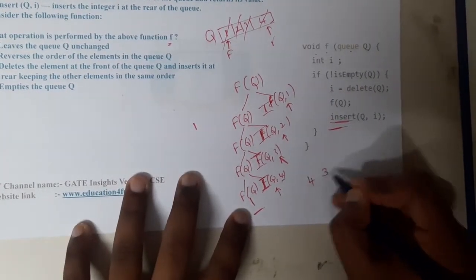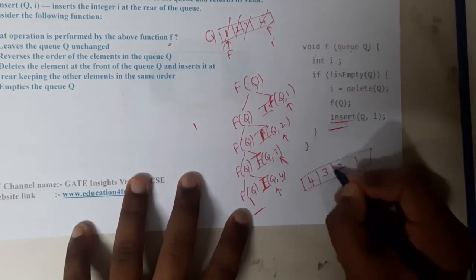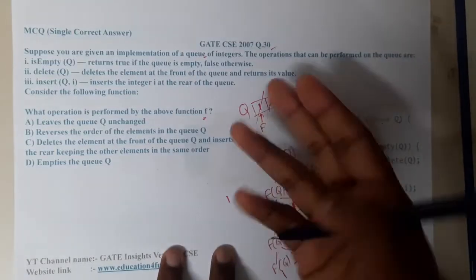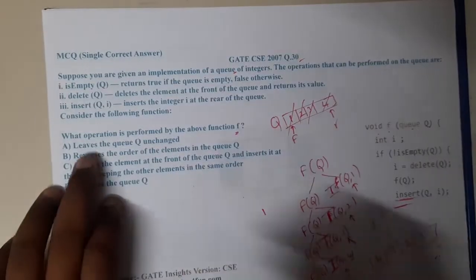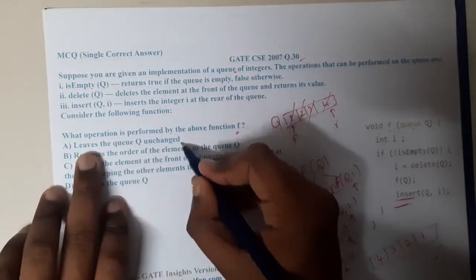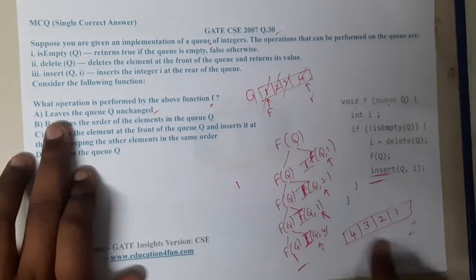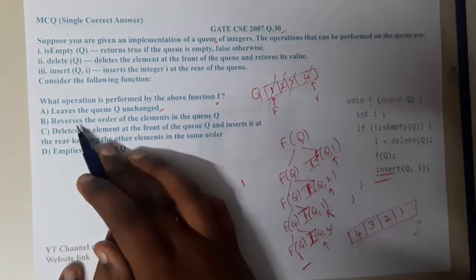Insert Q comma 4, so what it is inserting first: 4, after that 3, after that 2, after that 1. So now what is your queue consisting of, guys? It is consisting of the reverse values, right? So that is what the code is doing. It does not leave the queue unchanged; it is reversed.